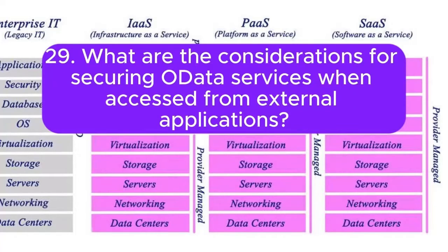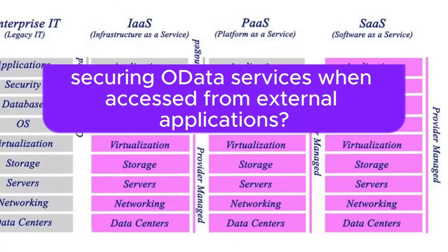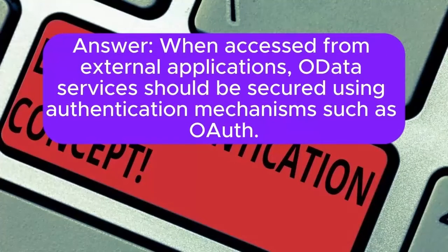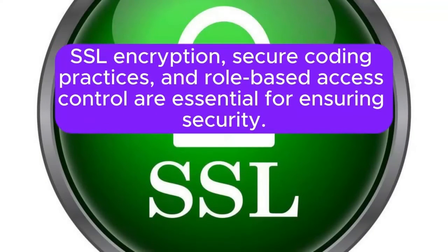Question 29: What are the considerations for securing OData services when accessed from external applications? When accessed from external applications, OData services should be secured using authentication mechanisms such as OAuth. SSL encryption, secure coding practices, and role-based access control are essential for ensuring security.